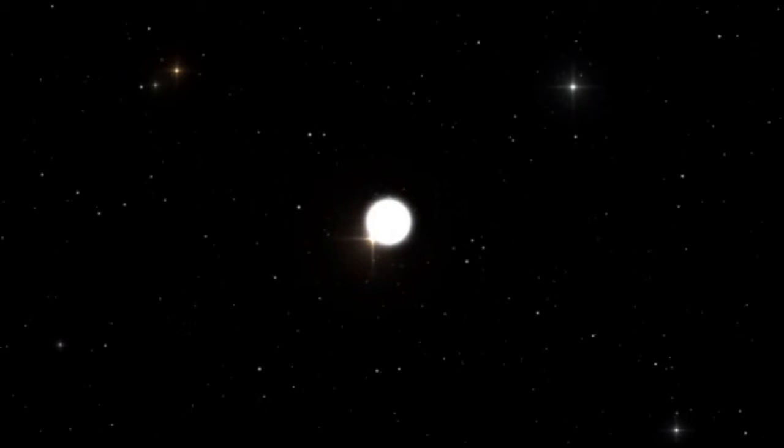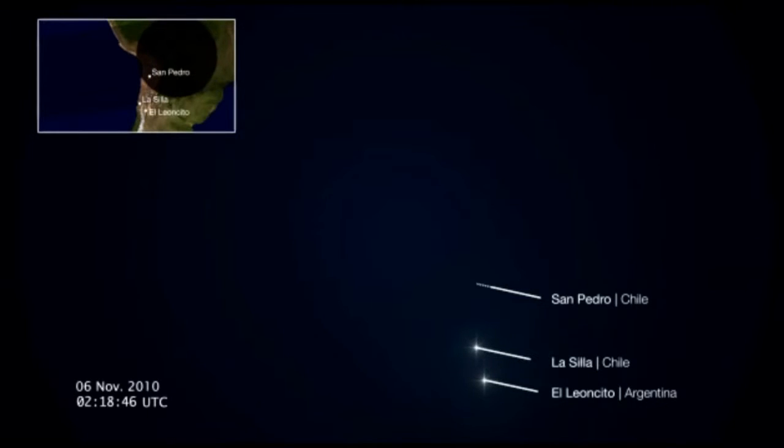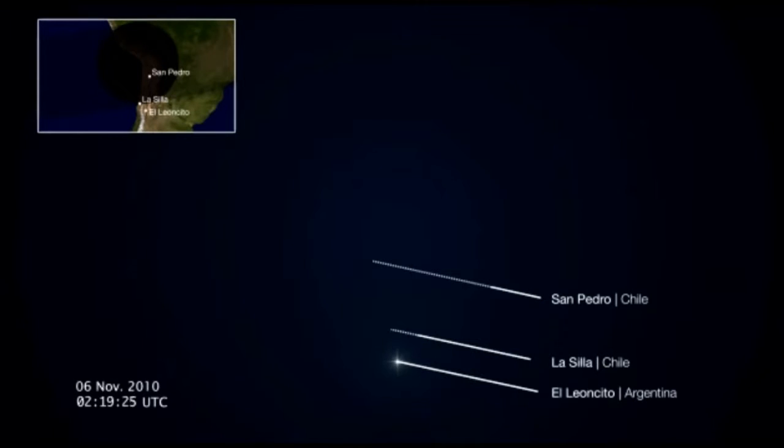Occultations are rather like eclipses. The background star disappears behind the object and reappears on its other side. As viewed from Earth, the brightness of the background star suddenly drops and then returns equally suddenly to its previous level.